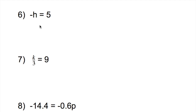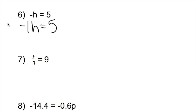There's an invisible coefficient. In front of the h is a 1, so negative h is equivalent to negative 1h equals 5. In order to get h by itself, I have to ask what operation is happening between the negative 1 and the h. Since the number is in front of the variable, it's called a coefficient, which means we are multiplying negative 1 by h. So the opposite of multiplying negative 1 is dividing by negative 1.